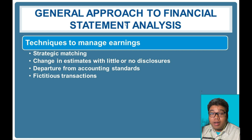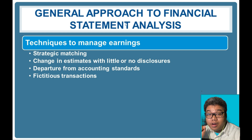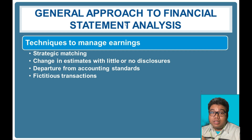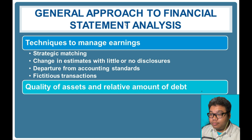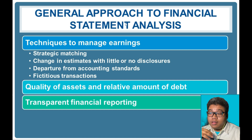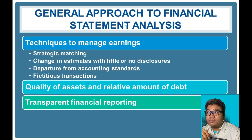Departure from accounting standards can be seen when statements are not consistent — if the current period's presentation does not adhere to how items were presented in the prior period, and there have been no changes in accounting standards, there may have been a departure from the standard. Additionally, fictitious transactions usually do not have proper partner accounts. In financial statement analysis, we strive to see consistencies in the recording of accounts.